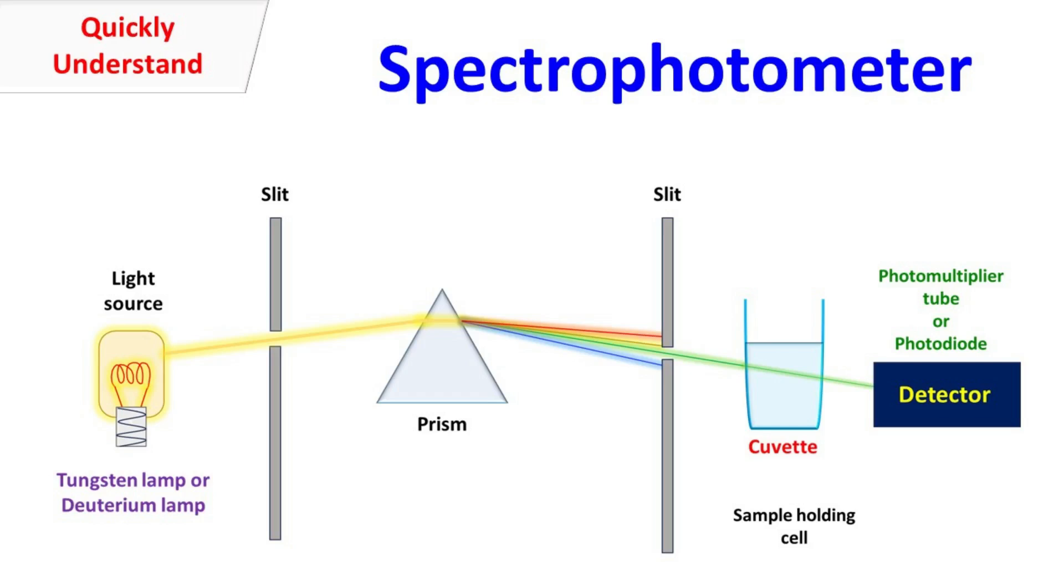A spectrophotometer is a device that measures absorbance or transmittance of light from a given sample at a specific wavelength.